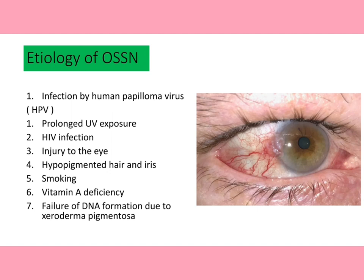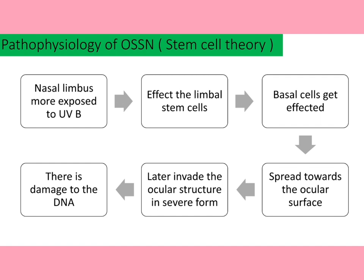Darker-skinned people residing near the equator are more prone to OSSN. It is more common in older males. Research conducted by Lee found that OSSN is most commonly seen in individuals aged 56 years or older.